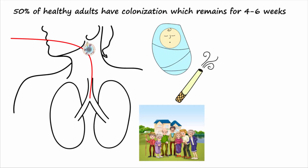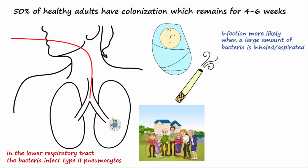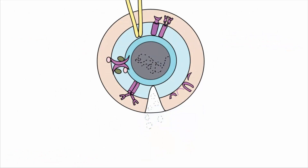Pneumococcal pneumonia is more likely when a large amount of pneumococcus is inhaled or aspirated into the respiratory tract, which can overwhelm host defense mechanisms. Gaining access to the lower respiratory tract, the pneumococcus can enter and infect cells of the alveoli, especially type 2 pneumocytes. The streptococcus bacteria use choline-containing ligands including CBPA and PSPA to attach to platelet activating factor receptors on type 2 pneumocytes.